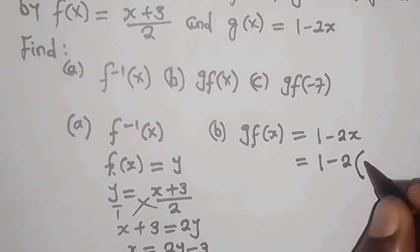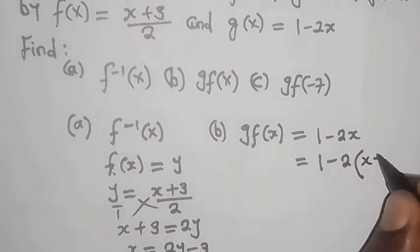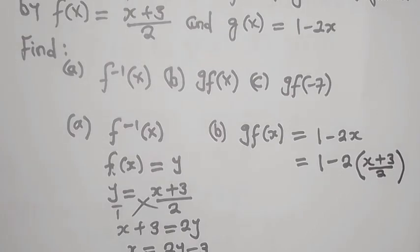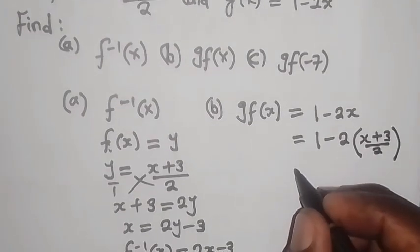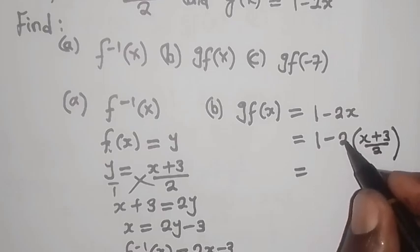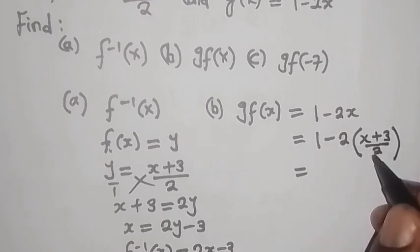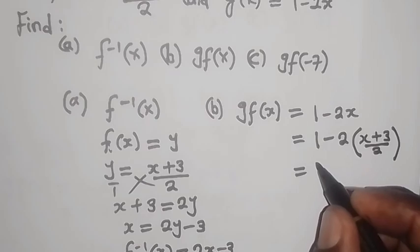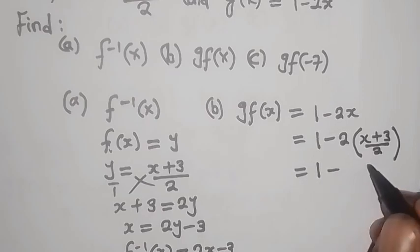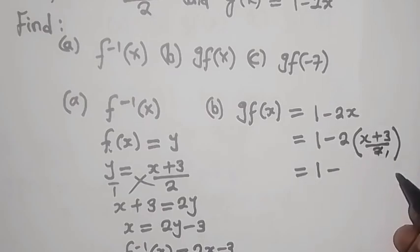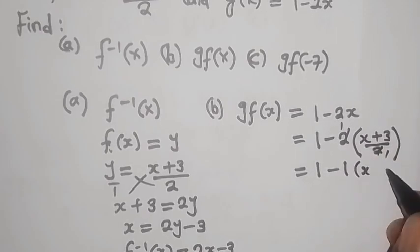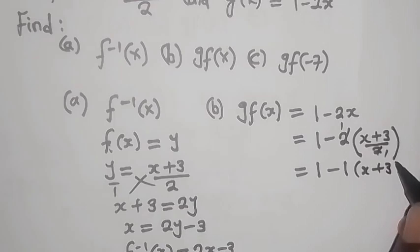So from there, I'm going to say x plus 3 over 2. And then now you can start simplifying. So this is going to multiply with everything. But because of this denominator at the bottom 2, it's going to divide with that one. So I'm going to have 1 minus. So when this one goes 1 there, then this one 1 there. So just mean with something like this.